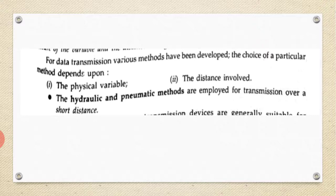For data transmission, various methods have been developed. The choice of a particular method depends upon the physical variable being sensed and the distance involved. Hydraulic and pneumatic methods are employed for transmission over a short distance, whereas electrical and electronic methods are suitable for both short as well as long distance transmission.